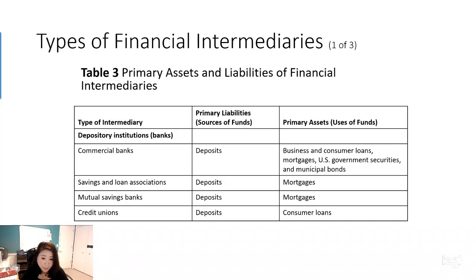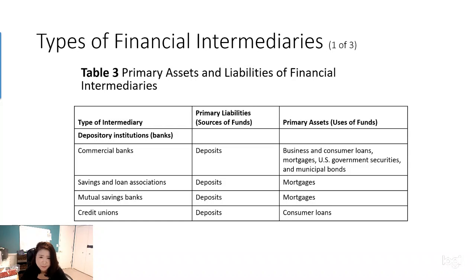The first one is commercial banks — like PNC Bank and JPMorgan Chase Bank. For commercial banks, they raise funds primarily through issuing checkable deposits, which is why you have checks from banks. They also raise funds through saving deposits — you can have a saving account with certain banks.